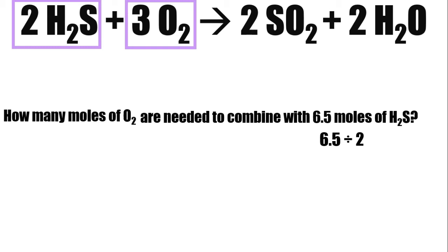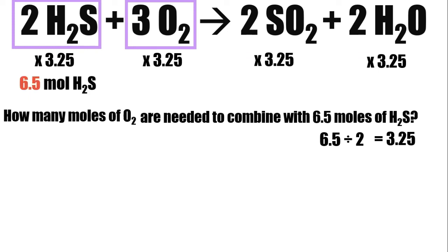The first step is to divide the moles, the given moles, with the coefficient of the given. So 6.5 divided by 2 equals 3.25. Then, if you remember, you have to multiply everything by 3.25. Again, we need to multiply to everything to make it look like we didn't change anything. So 2 times 3.25, this will give us 6.5 mole of hydrogen sulfide. 3 times 3.25, we will have 9.75 mole of oxygen. So we will stop there because we don't need the others.